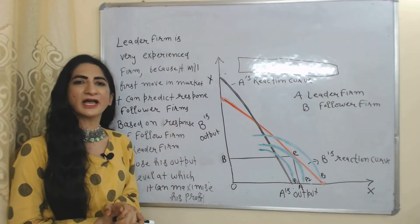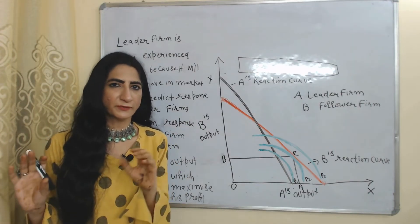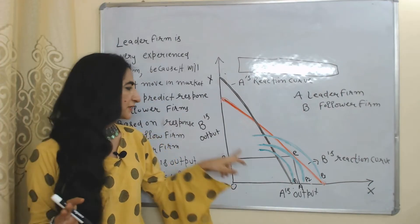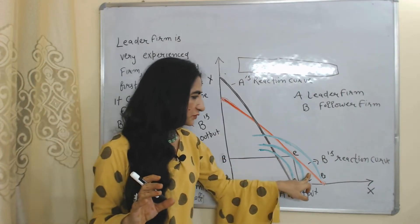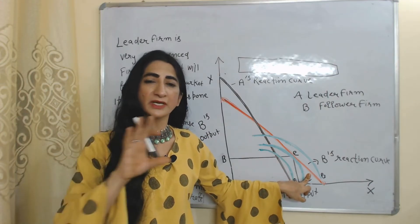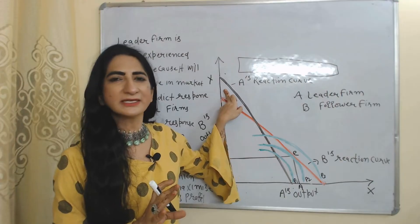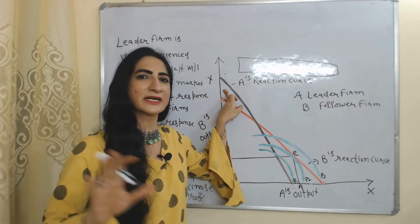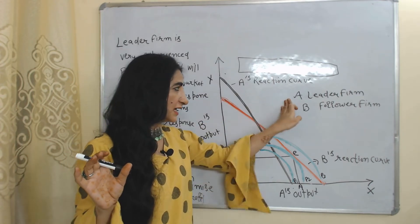We will understand this model with the help of a diagram. We assume we have only two firms, A and B. On the X-axis we have output of A, and on the Y-axis we have output of B. The red curve shows B's reaction curve — the response of B to the strategy of A. The black curve shows A's reaction curve — the response of A to the strategy of B.